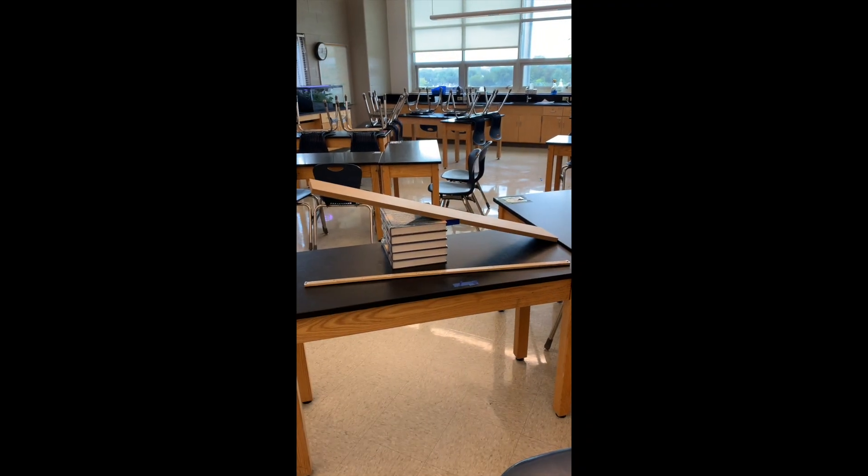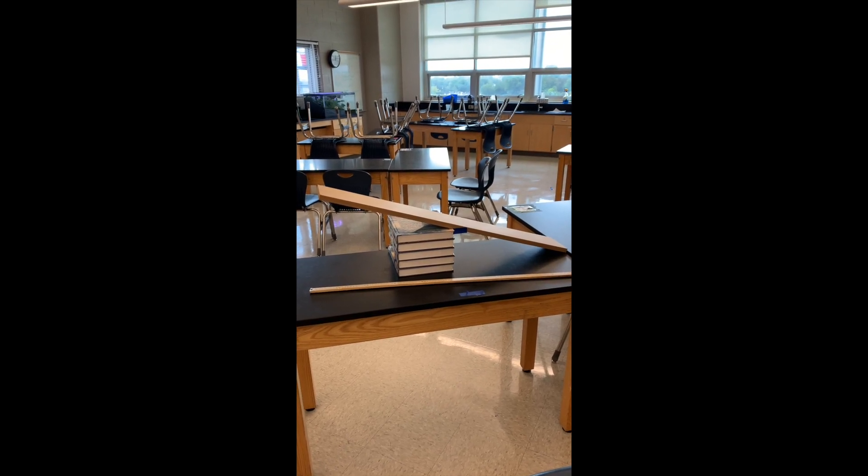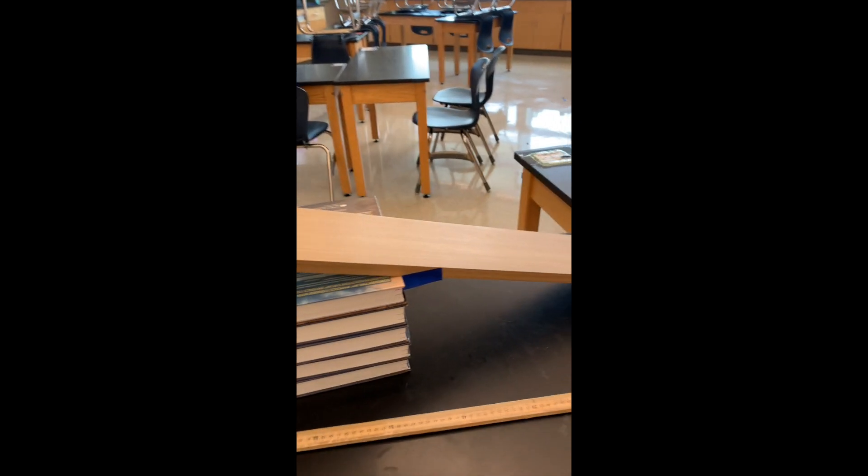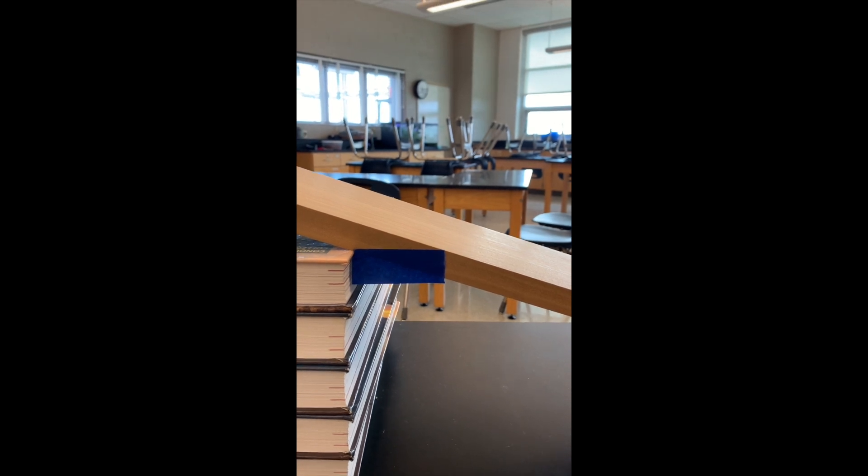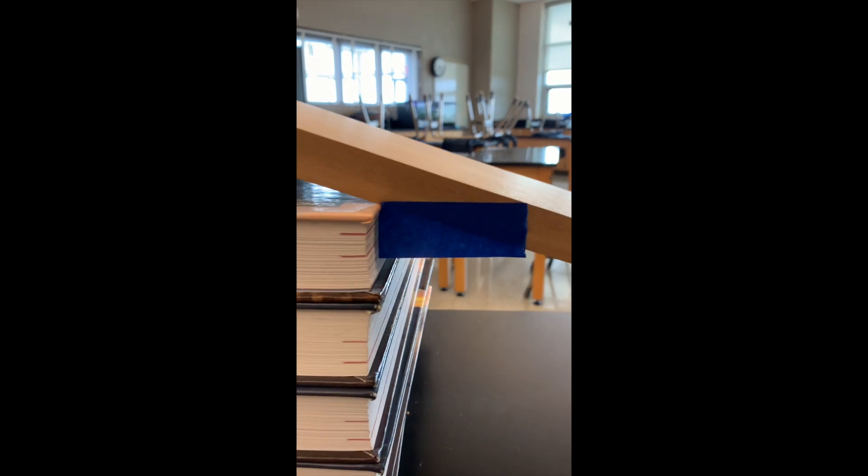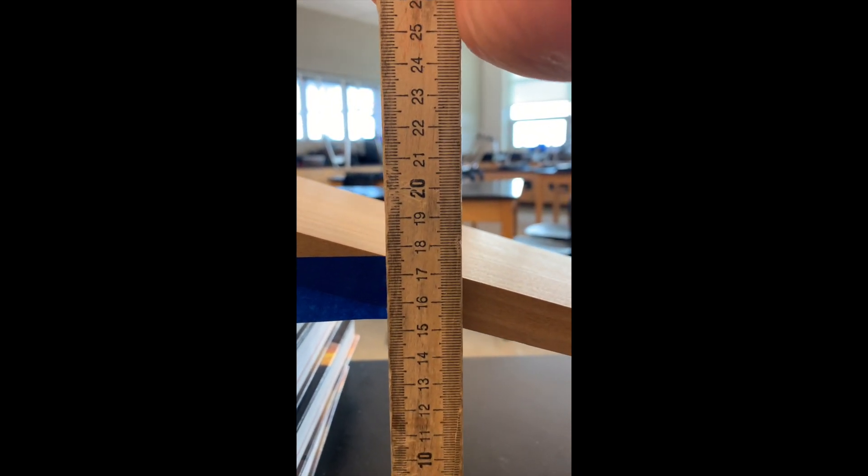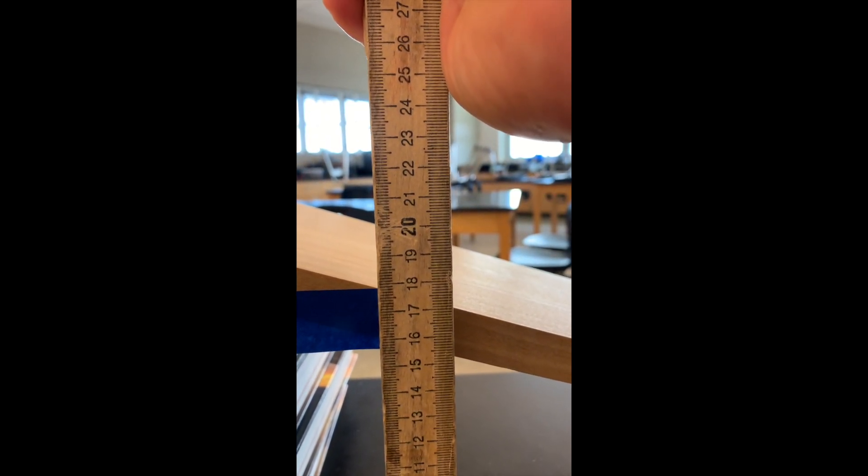We've now changed the ramp so that it's steeper. We pushed the books closer to the end of the ramp so that it sits higher up in the air. However, we remarked the ramp so that the height of the books is still marked on the ramp. So the height of the books should still be about the same as it was before. And you can see that it is still between 17 and 18 centimeters, and you can read it off of the meter stick.